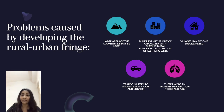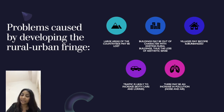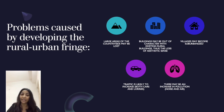Number one problem is that large areas of the countryside are being lost. Next is that new buildings are out of character — they have urban characteristics and are out of character compared to the existing rural buildings. Villages may also become urbanized and are losing their characteristics. Traffic is likely to increase because people living in the rural-urban fringe have to move to the city daily for work. There may also be an increase in pollution as more people come to live there while working in the city, causing more movement and pollution in these regions.